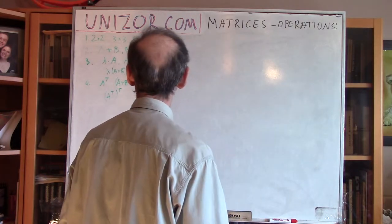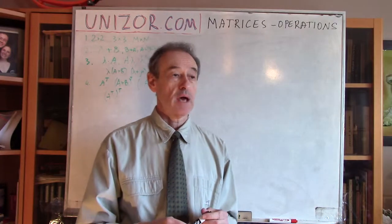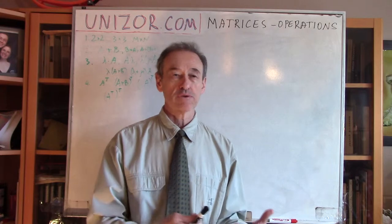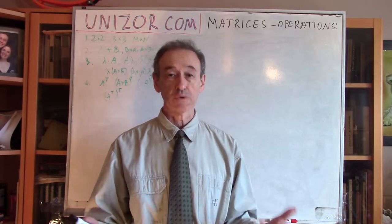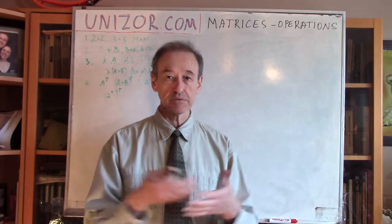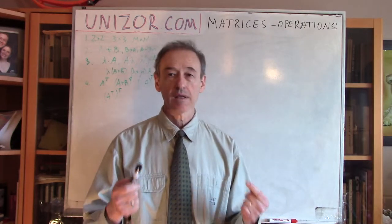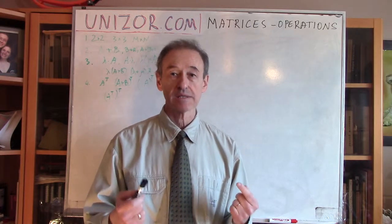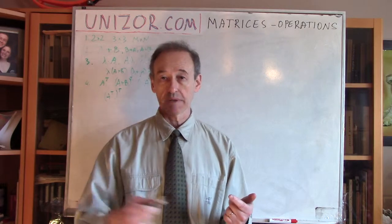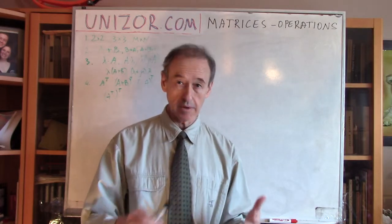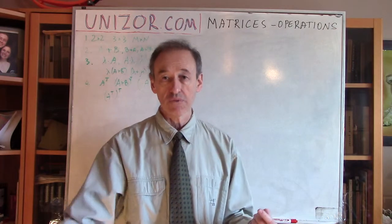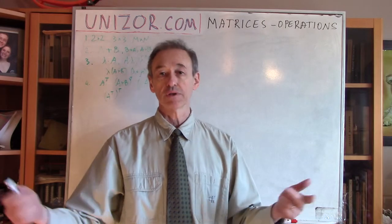Let's start. The first operation is addition. It's not really related specifically to matrices — it's related to any two sets of numbers. How can we think about addition of two different sets of numbers? The number of elements in these sets must be the same, and then we just add corresponding elements. They're supposed to be ordered — first, second, third, etc. — and we add the first element of the first set to the first element of the second set, and that would be the first element of the result.